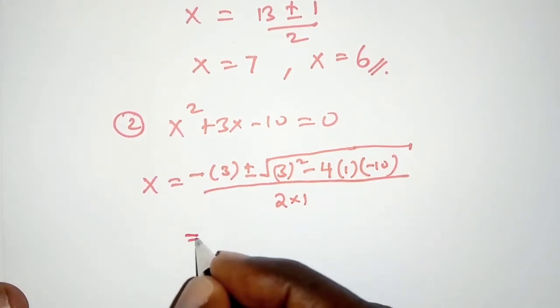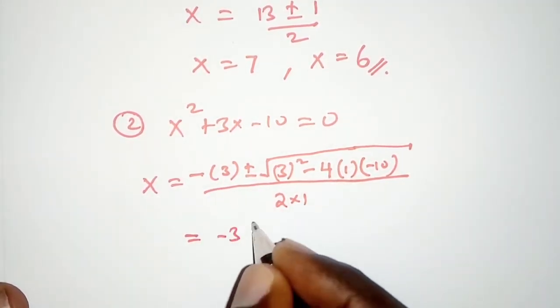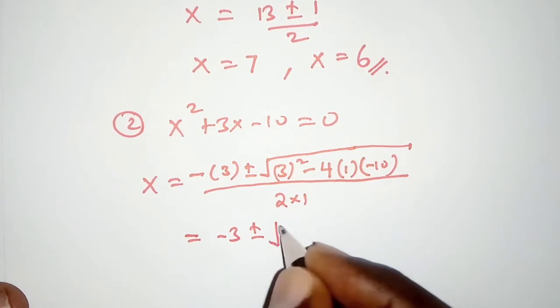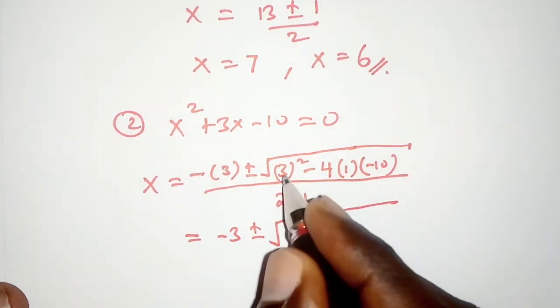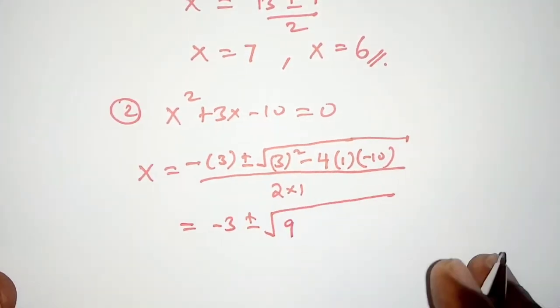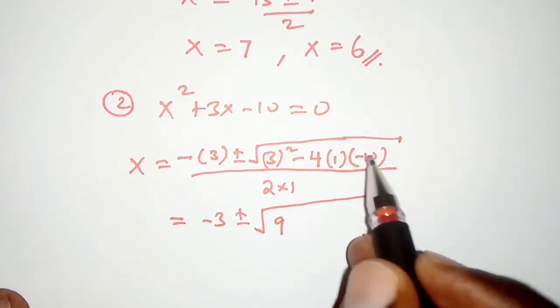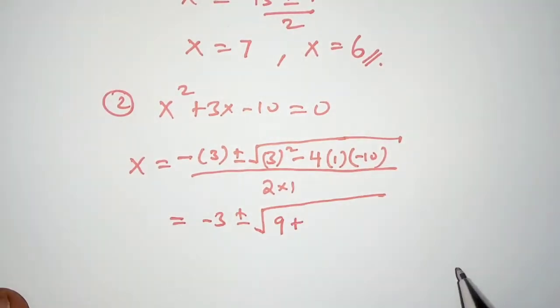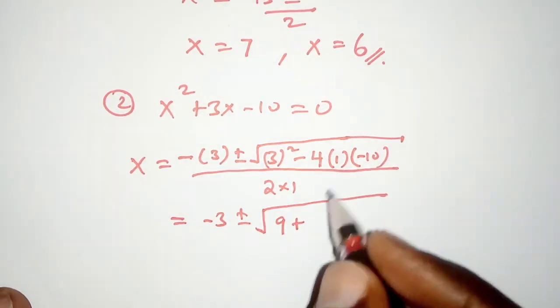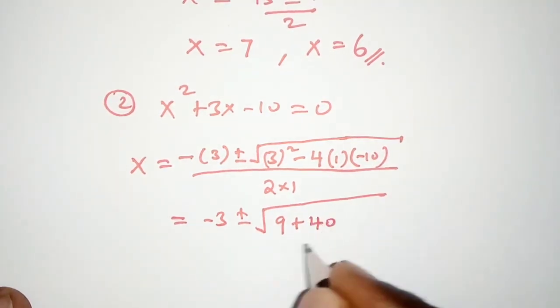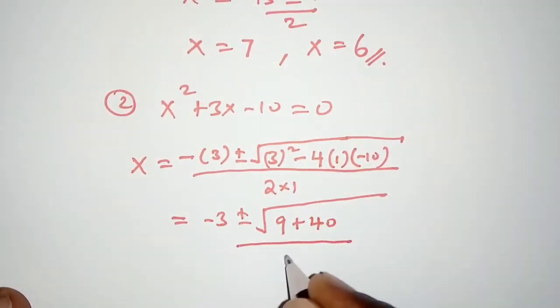So this simplifies to negative 3 plus or minus the square root of, so this becomes 9 and this negative and negative will multiply so that we have plus, and then that is plus 40. We'll divide that by 2.